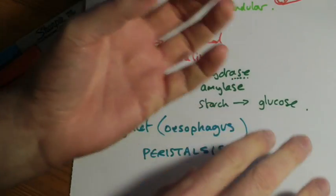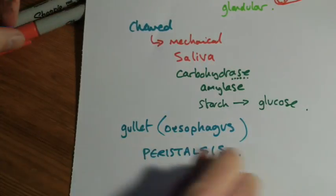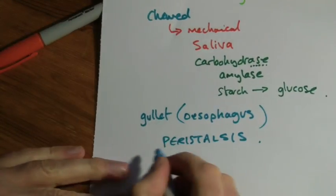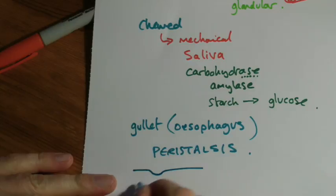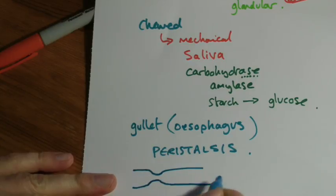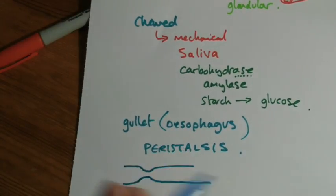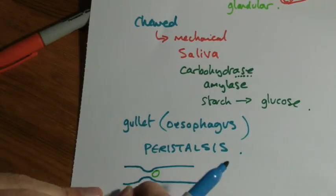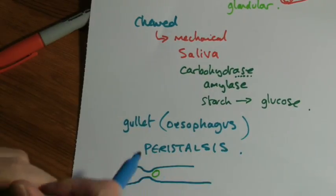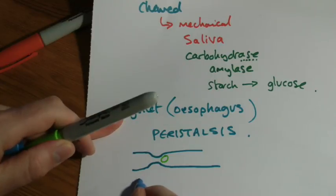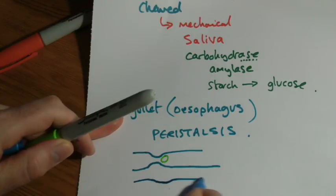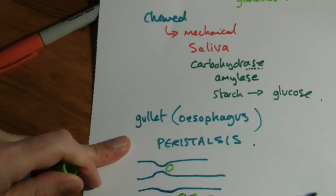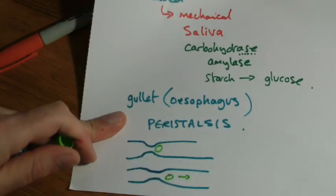So it doesn't happen in little blocks like I'm showing here. It's more like a bit of a wave action. There's the bit contracting. There's the muscles contracting. And then they'd relax. And then a bit further along would contract. And we've moved our lump of food.